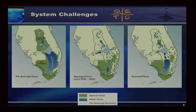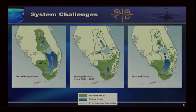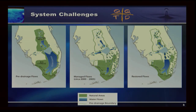Looking at the restored flows graphic, with Kissimmee River restoration we'll have better timing of flows and will be able to have additional storage in that area, which will reduce phosphorus into Lake Okeechobee. Our goal is to reduce estuary discharges both to the St. Lucie and Caloosahatchee River. We want to move more water south through our storage treatment areas in the EAA and into Everglades National Park, and we envision additional storage north of Lake Okeechobee as well.